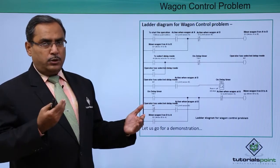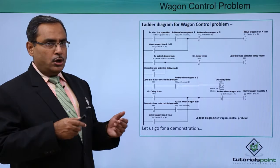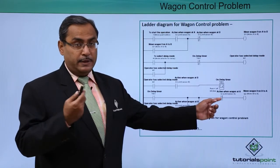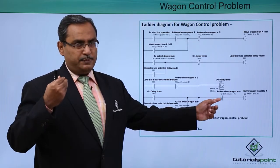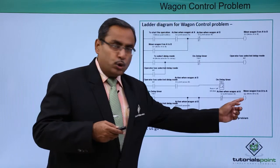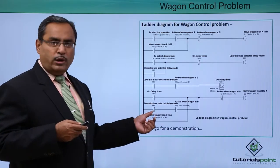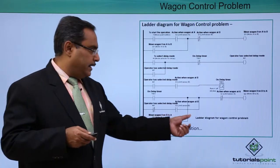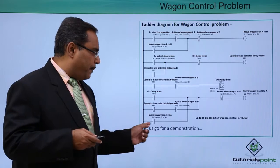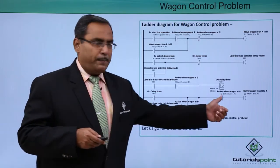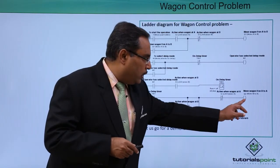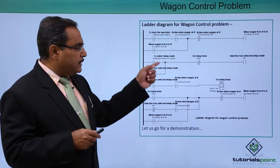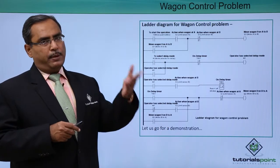When the wagon returns from B to A, there are two modes. Mode 1: when the on-delay timer is on, after 5 seconds the move from B to A is initiated until limit sensor A is reached. Mode 2: when the delay mode has not been selected and the wagon is at limit switch B, the return journey is immediately initiated via a parallel path. The motor moving the wagon from B to A will remain on until limit A is sensed. The simulation testing of these outputs will be done in the practical demonstration.